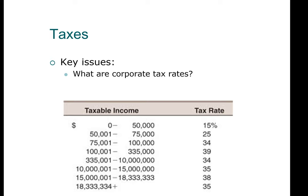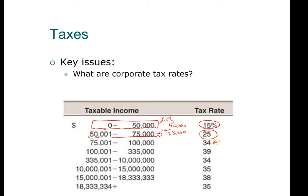The way you read a tax table is to look at the income bracket. The first $50,000 — from zero to $50,000 — is taxed at 15%. Income between $50,001 and $75,000, that next $25,000, is taxed at 25%. So if your company makes $80,000, not the entire $80,000 is taxed at 34%. Rather, the first $50,000 is taxed at 15%, the next $25,000 at 25%, and the remaining amount at 34%. This concept is called the marginal tax rate.